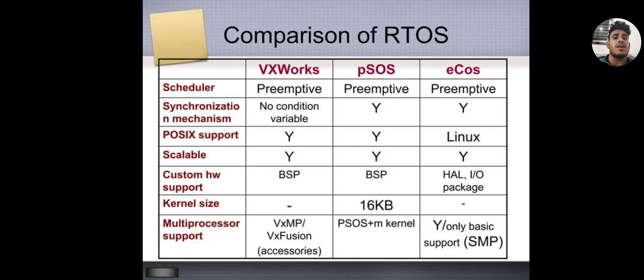Comparison of RTOS: VxWorks, pSOS, and eCos. Scheduler was preemptive in all three. Synchronization: no condition variable in VxWorks, yes in pSOS and eCos. POSIX support was Linux. Scalable was yes in all three. Custom hardware support: BSP in VxWorks and pSOS, HAL in eCos. Kernel size: 16KB in pSOS.